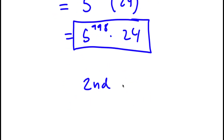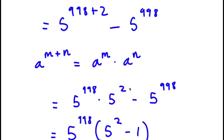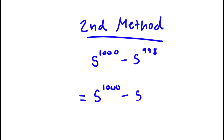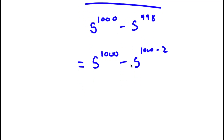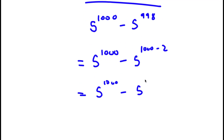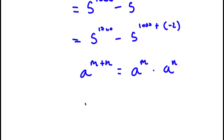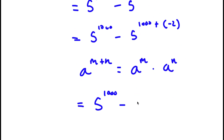I actually have a second method of solving this problem. Again, I start with 5^1000 minus 5^998. This time, instead of changing 1,000, I'm going to change 998 to 1,000 - 2. So 5^998 = 5^(1000 + (-2)). Using the rule a^(m+n) = a^m × a^n, this equals 5^1000 times 5^(-2).